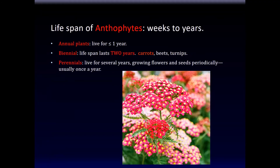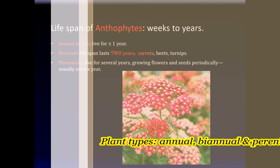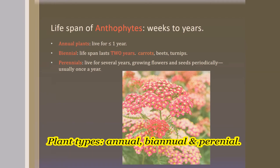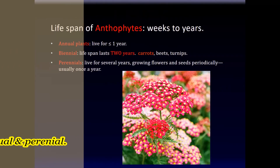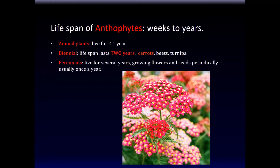I'd like to finish by talking about the lifespan of anthophytes — flowering plants. The lifespan of flowering plants can range from weeks to years. Simply speaking, they can be divided into three categories: annual plants, those that live less than a year; biennial plants, with a lifespan of two years — examples include carrots, beets, and turnips; and perennials, which live for several years, growing flowers and seeds periodically, usually once a year.